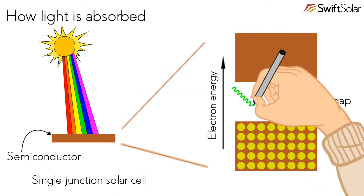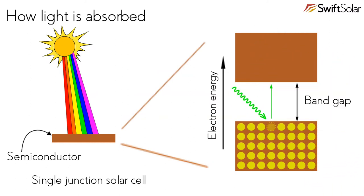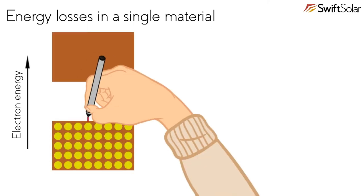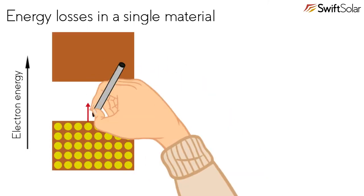Light is absorbed when an electron takes the energy of a photon of light and jumps up across this band gap. But if the energy of the light is smaller than the band gap, the light simply passes through without being absorbed.